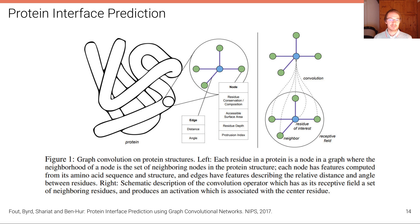This is another typical problem for graphs: protein interface prediction, where in this case each residue in a protein is a node in a graph, but the neighborhood of a node is the set of neighboring nodes in the protein structure. So you can then again apply the paradigm of graph neural networks onto these proteins for making a prediction on this problem.